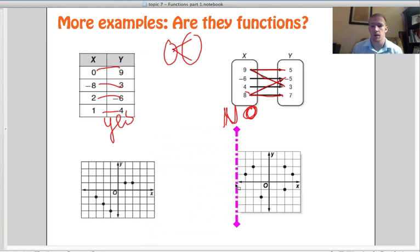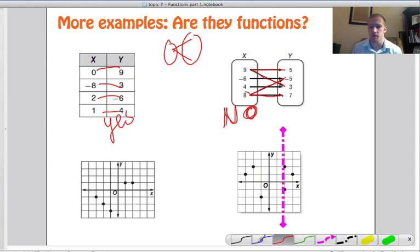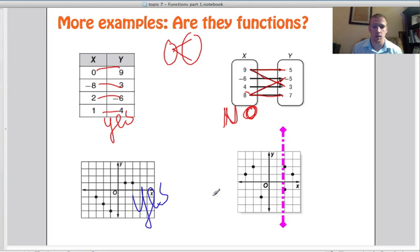Now look at over here. Once, once, once, twice. Hits it in two places. So this is not a function. So this one's yes. This one's no. Because this and this, an input of 2 on our x gives us two outputs for the y's. So that's not a function.